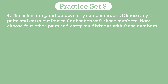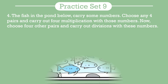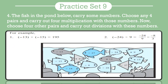Question 4: The fish in the pond carry some numbers. Choose any 4 pairs and carry out 4 multiplications, then choose 4 other pairs and carry out 4 divisions. For example, minus 13 multiplied by minus 15 equals 195 — negative times negative is positive. For division, minus 24 divided by 9 gives minus 8 upon 3. In this way, find 4 examples each for multiplication and division using the numbers in the fish pond.